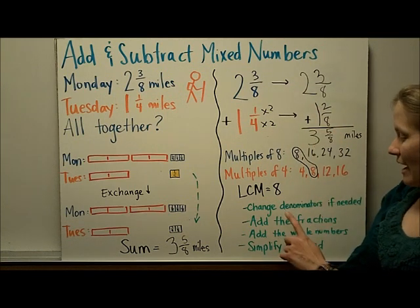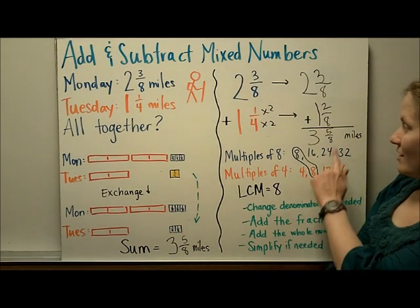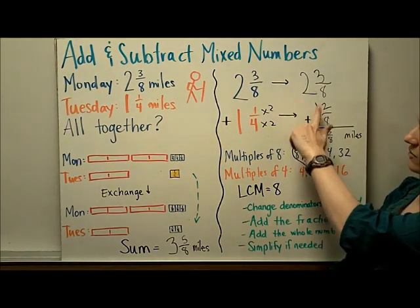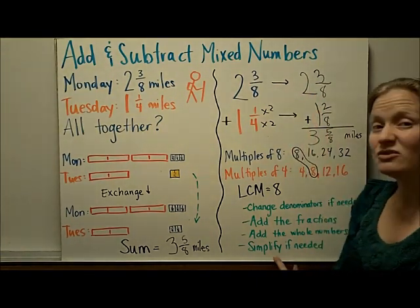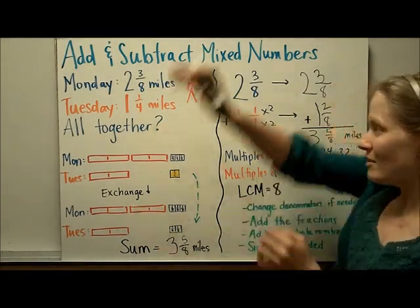So we see that I changed the denominators to make them have common denominators. Then I added the fractions. Then I added the whole numbers. And if you needed to, you would, of course, simplify at this point, but 5/8 is already in simplest form, so we are done.